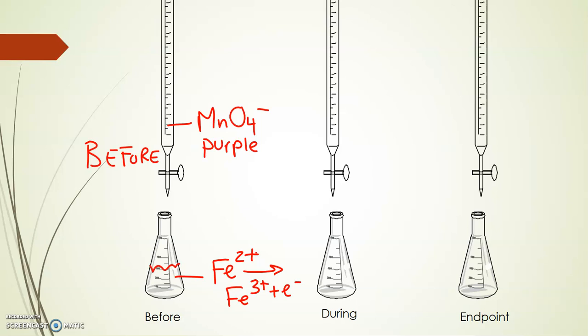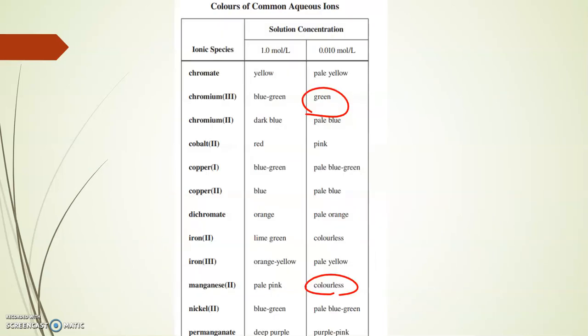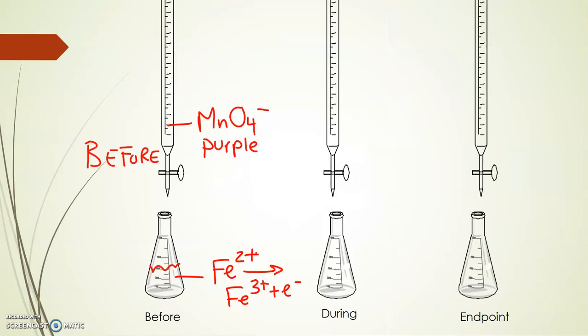Before the titration starts we put MnO4- the purple material into the burette and we put whatever it is we're titrating, in this case Fe2+, we put this in the Erlenmeyer flask and we're ready to go. Fe2+ if you recall is colorless. Looking back at our table, Fe2+ has no color. So we know in the Erlenmeyer flask there's going to be no color to start. MnO4- is purple.